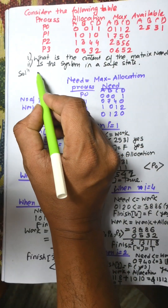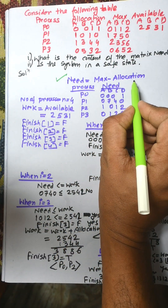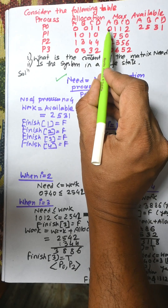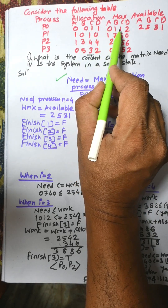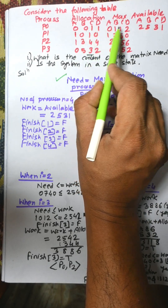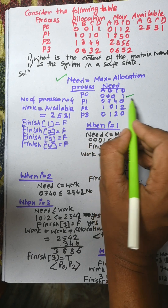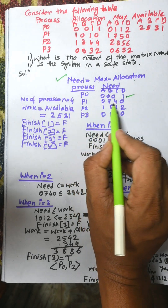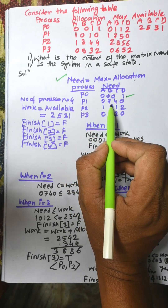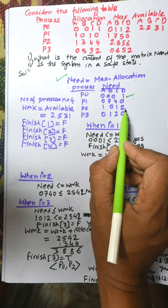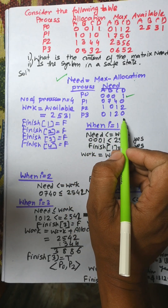First, we need to find the Need matrix: Need = Max minus Allocation. For P0: 0-0, 1-0, 1-1, 2-1 giving 0, 1, 0, 1. Similarly, we calculate Max minus Allocation for P1, P2, and P3.